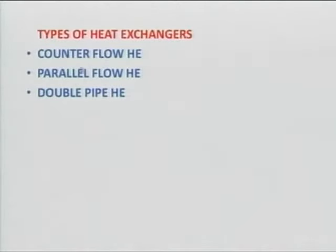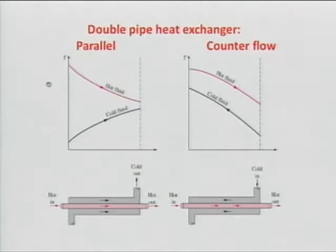There are various types of heat exchangers: counter flow, parallel flow, double pipe. I am going to take tube-in-tube because I am sure all of us have built tube-in-tube heat exchangers in our labs. What is the typical wattage for which a tube-in-tube heat exchanger is used, for single-phase only? Typically I will not go above 6 to 10 kilowatts.